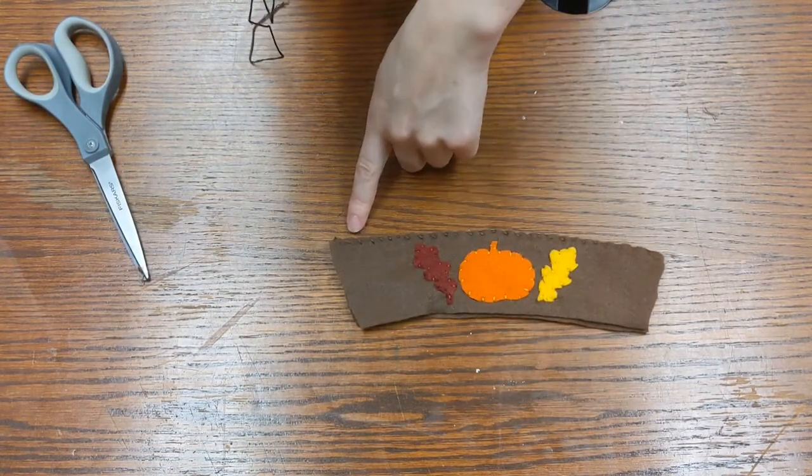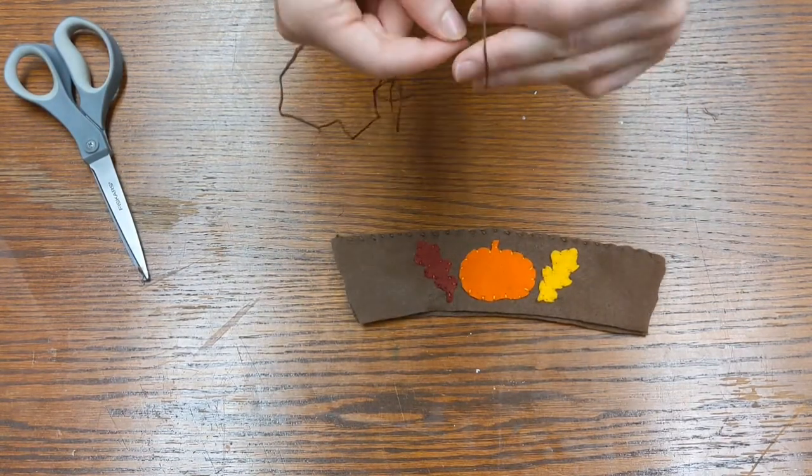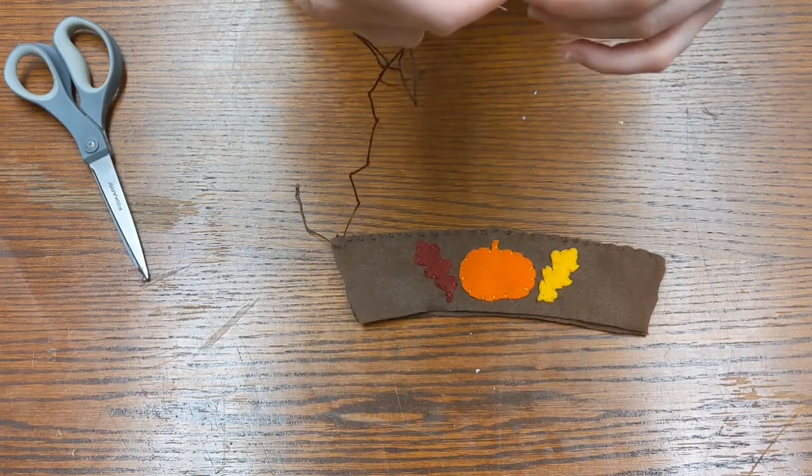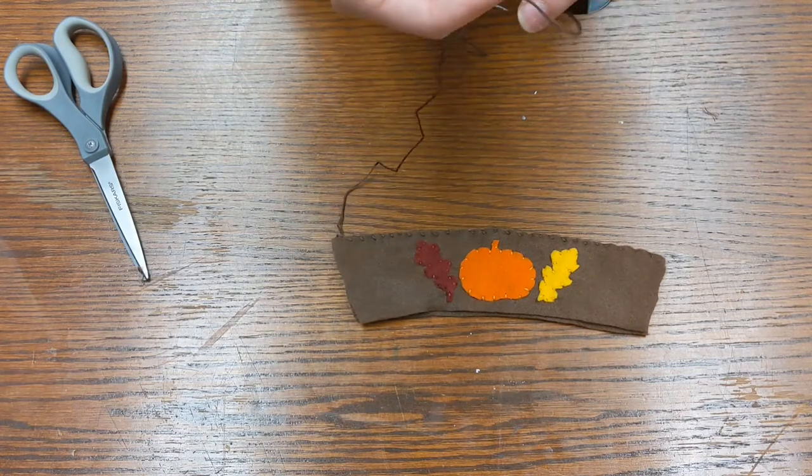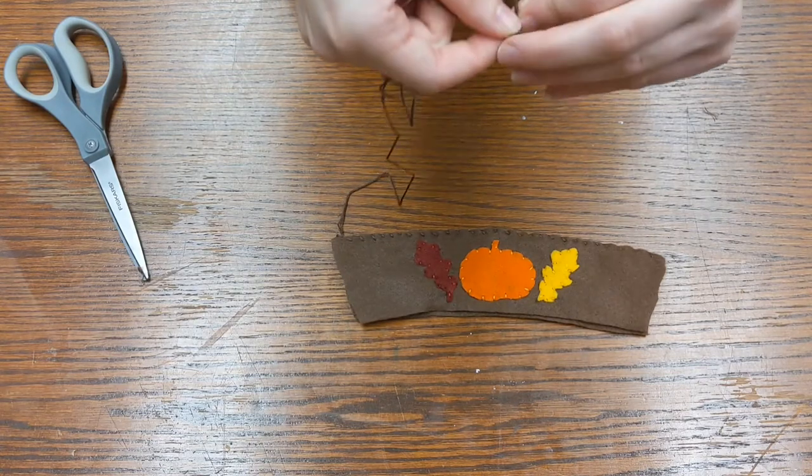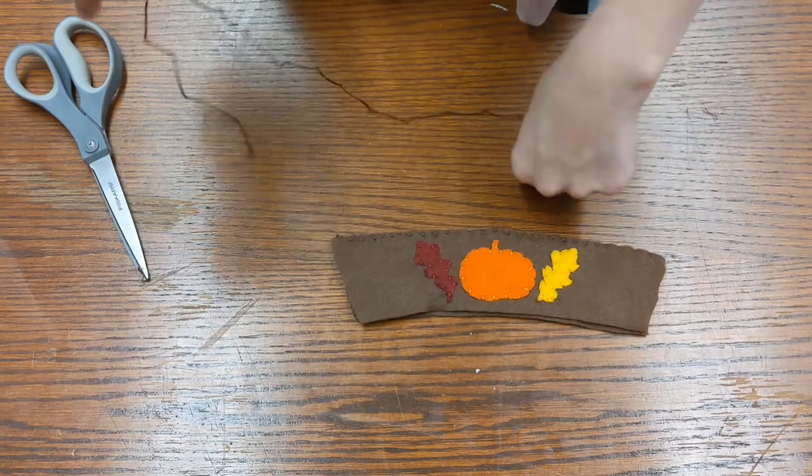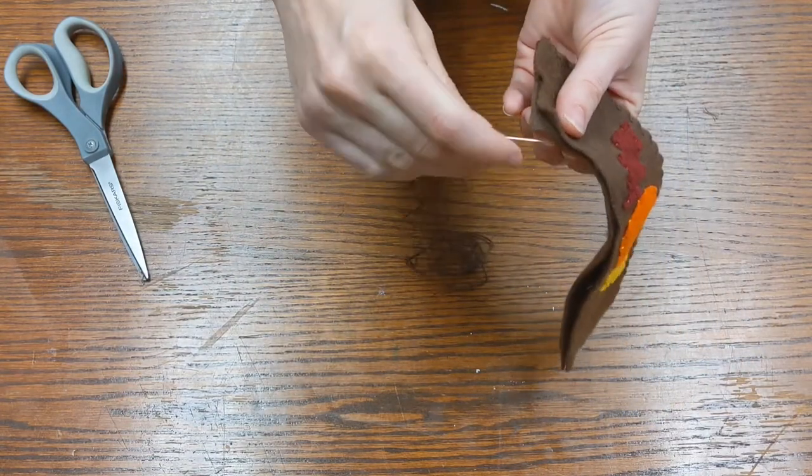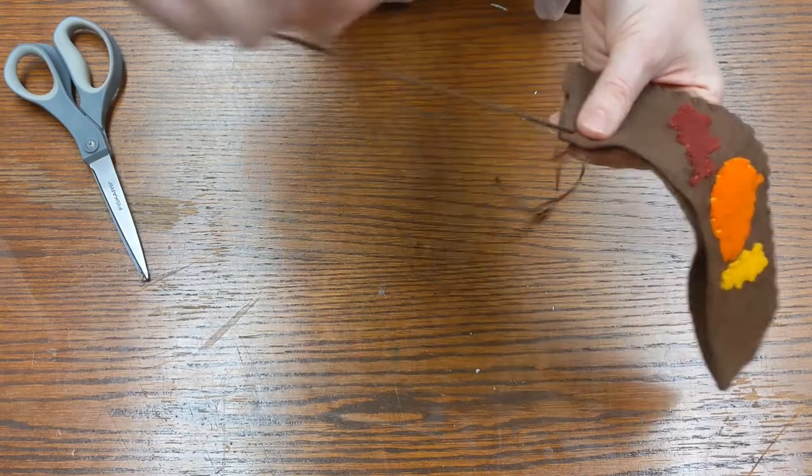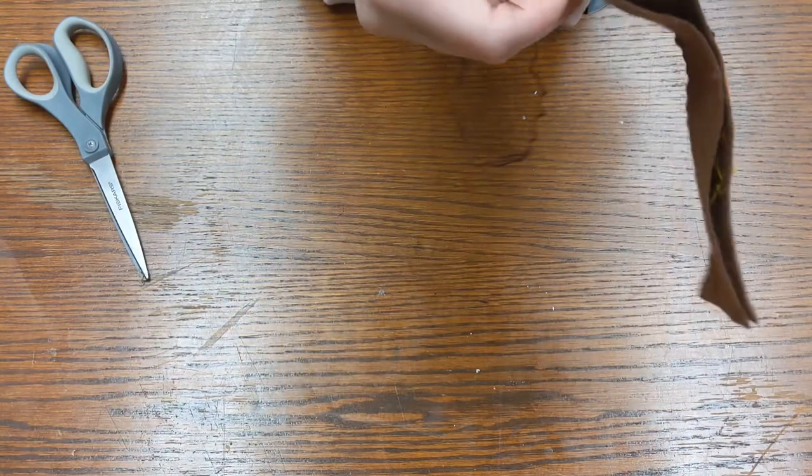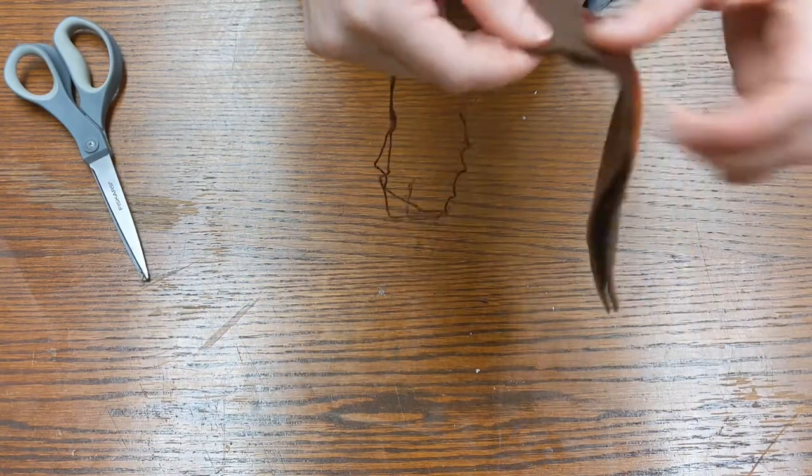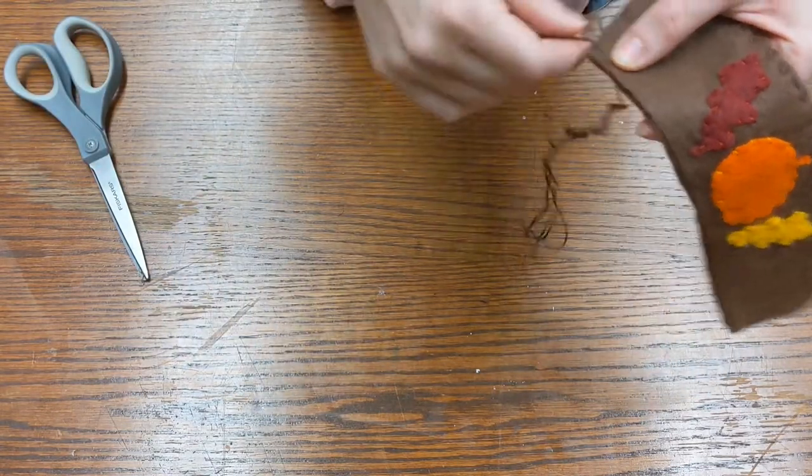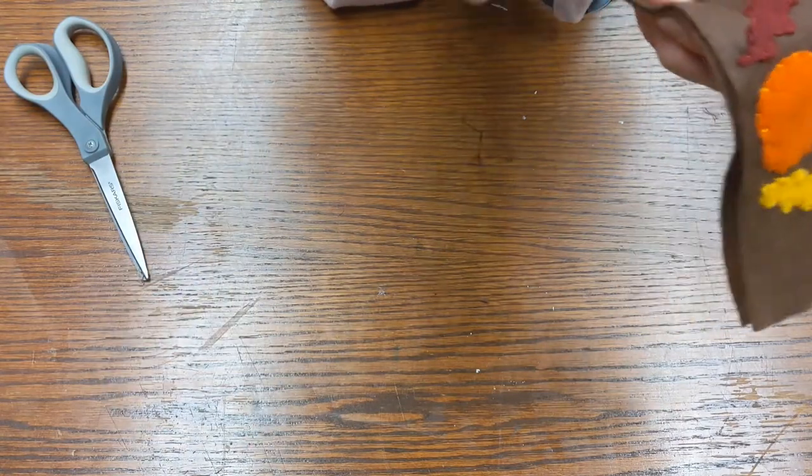Once you've whip stitched across the entire top and tied it off, we're going to knot our embroidery floss once more. And then we're going to start on the bottom. Once again, going between the layers to anchor our knot in there, pushing the thread down in so you won't see it. And then whip stitch this long side.